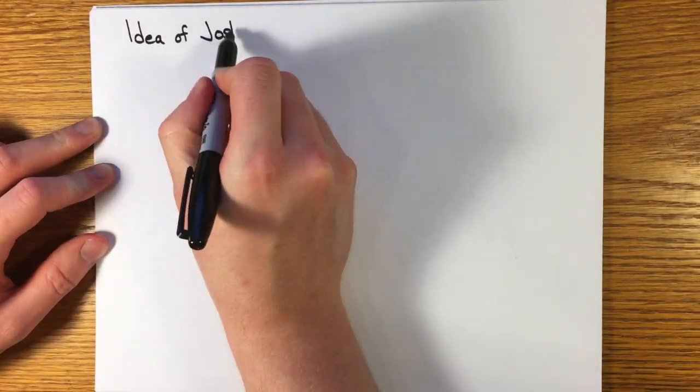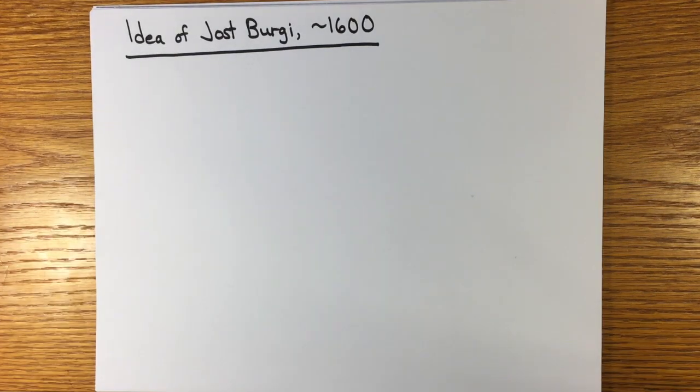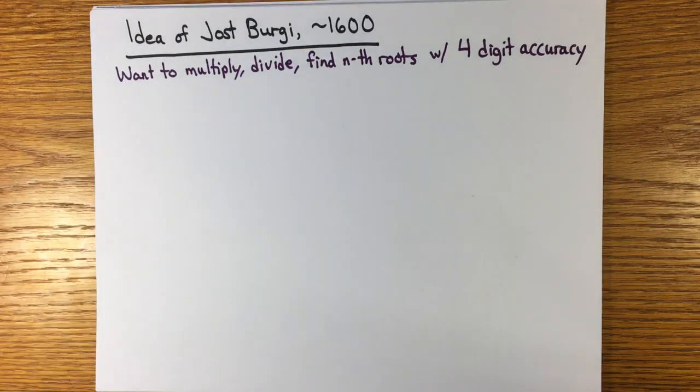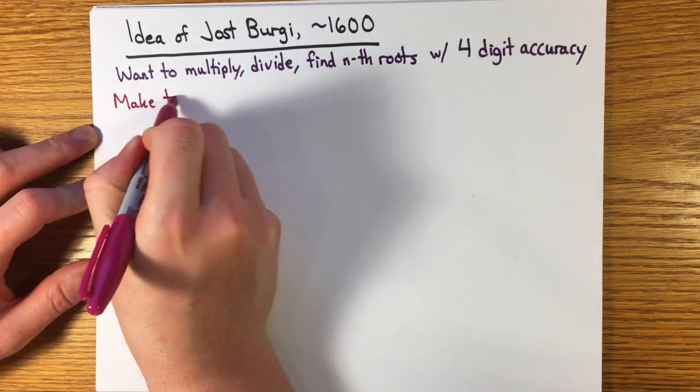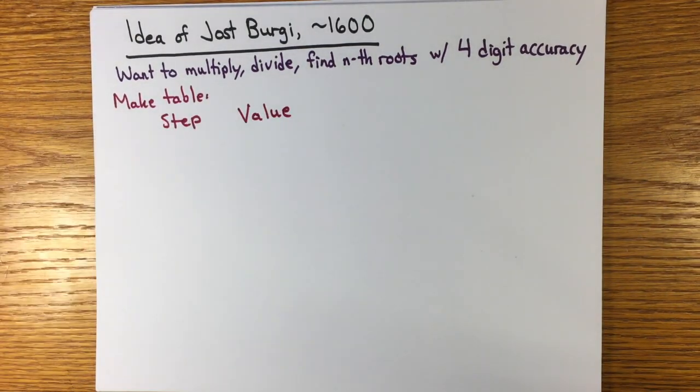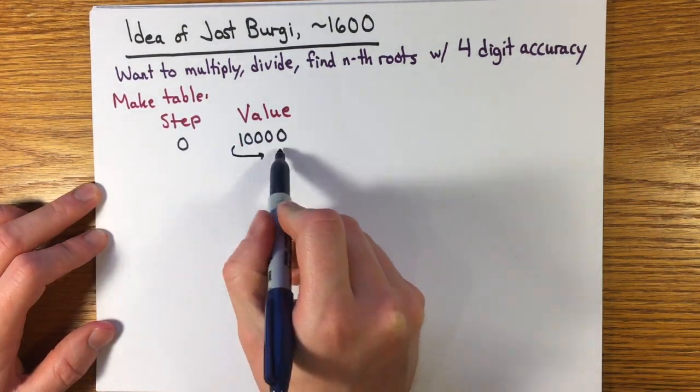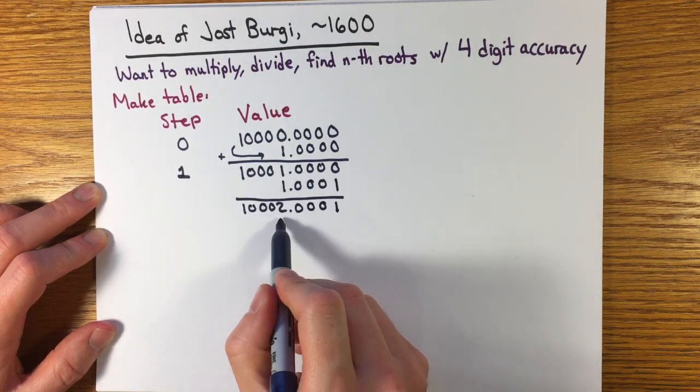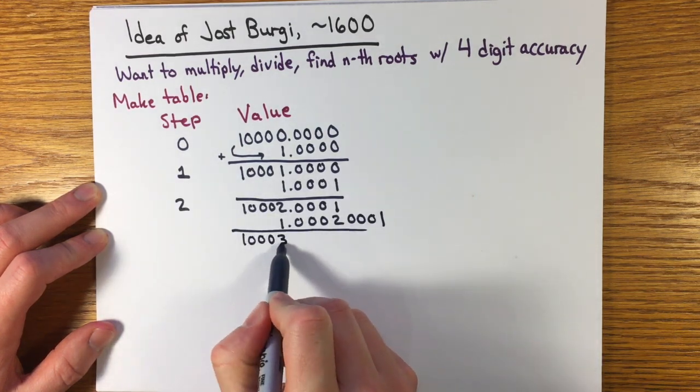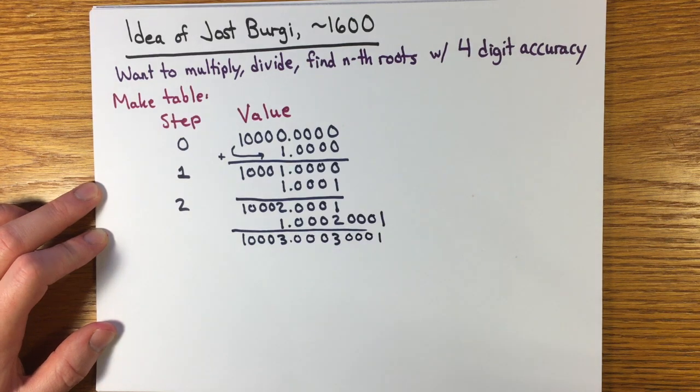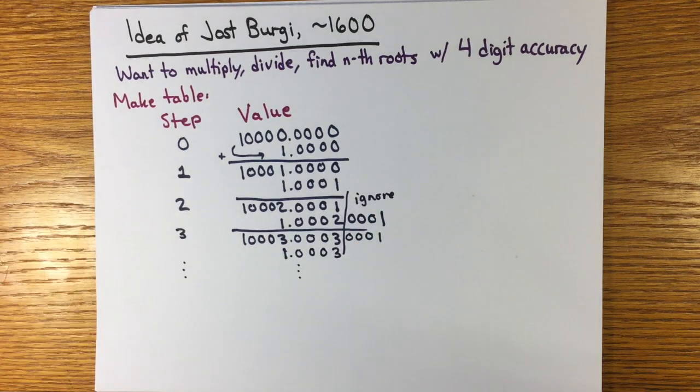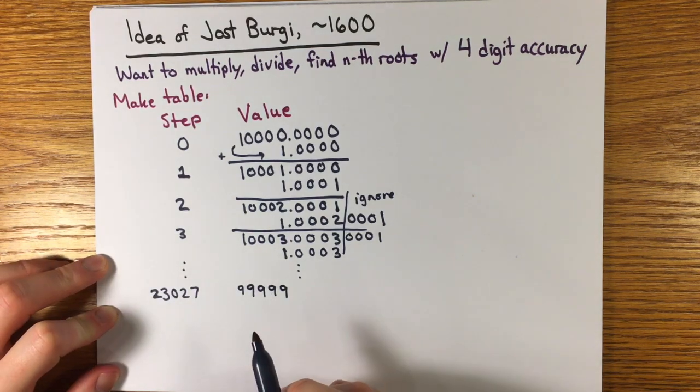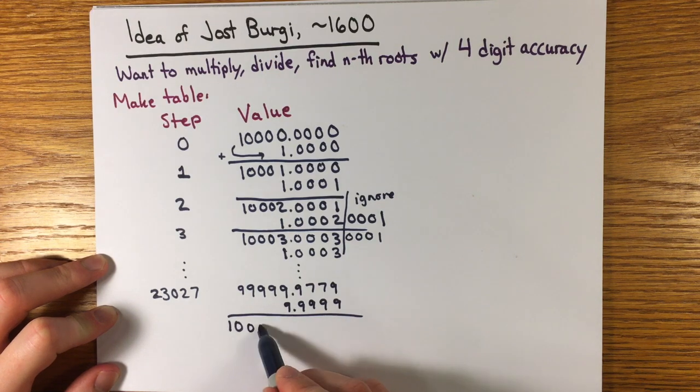By about 1600, the mathematician Joost Burgi came upon the idea of making a more versatile table like this. Suppose you want to do arithmetic with four digits of accuracy. Burgi began with the number 10,000, or 10 to the fourth, and then at each step, he shifts the number he has over four places and adds it to get the next number, and repeats over and over, keeping only an extra four places. You can think about why. This he continued painstakingly until he reached the next power of 10 after 23,027 steps.